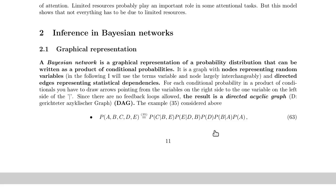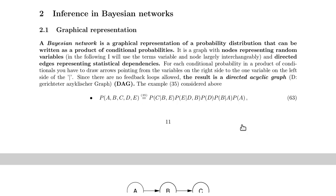In the previous lecture on Bayesian theory, we saw that it is advantageous if you can express a joint probability distribution as a product of conditionals. That saves a lot of memory and also a lot of computation. Bayesian networks or graphical models in general use a graphical representation of these products of conditionals, as shown further below.